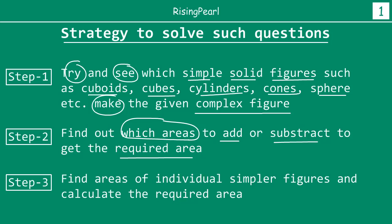The third step is to find the individual areas of these simpler figures and then calculate the required area based on step 2 — whichever areas we need to add or subtract. So the third step is to find each of the individual areas of the simple solid figures identified in step 1 and, using step 2, do that calculation to find the required area.